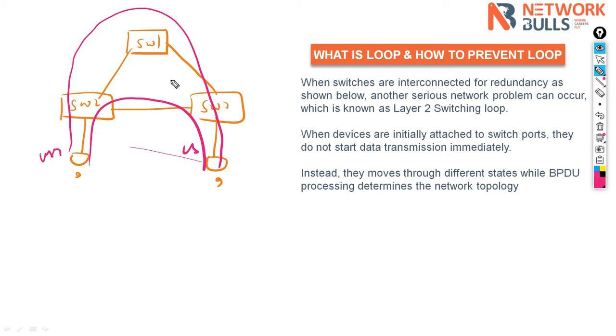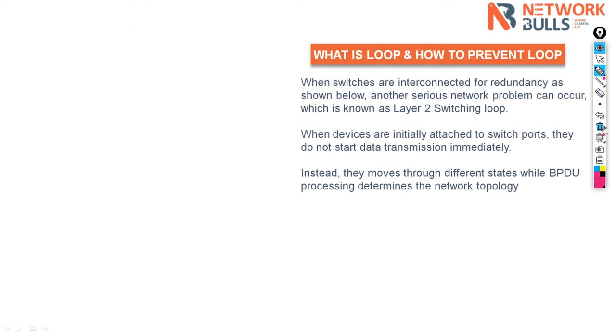Whenever we connect switches in a redundant way, there are chances of loop. So let's understand what is a loop. Loop is nothing, it is a situation, so let me explain it to you with the help of a topology.